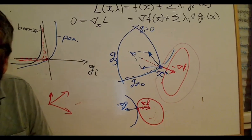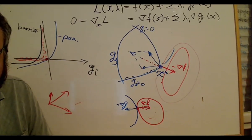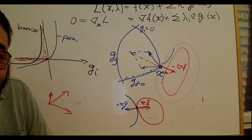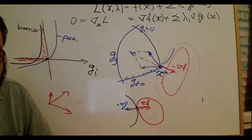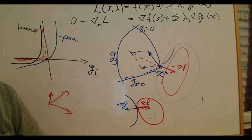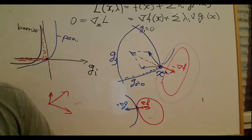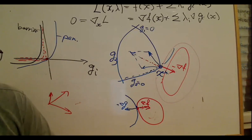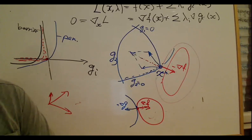Regarding what can go wrong with the limit when the feasible set is non-convex: for non-convex problems you can only use the notion of local optimality. This topic is quite loaded and we should take it offline — it's too detailed to discuss fully now.